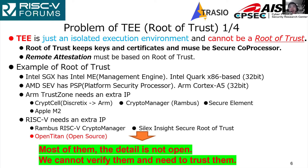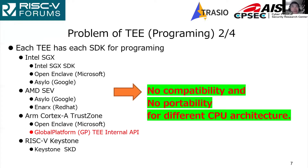The second problem is that TEE has no common programming style. Each TEE has its own SDK for programming. Some SDKs are used for different CPUs, but they are not universal — meaning there is no compatibility or portability for different architectures. Among them, the GlobalPlatform TEE Internal API is designed to be architecture-independent. We extend it for some CPU architectures.